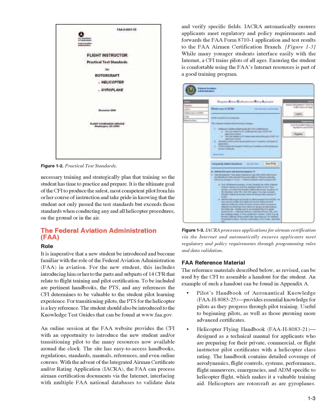With the advent of the Integrated Airman Certificate and/or Rating Application, IACRA, the FAA can process airman certification documents via the internet, interfacing with multiple FAA national databases to validate data and verify specific fields. IACRA automatically ensures applicants meet regulatory and policy requirements and forwards the FAA Form 8710-1 application and test results to the FAA Airman Certification Branch. While many younger students interface easily with the internet, a CFI trains pilots of all ages, and ensuring the student is comfortable using the FAA's internet resources is part of a good training program.